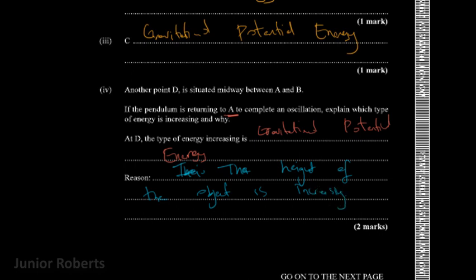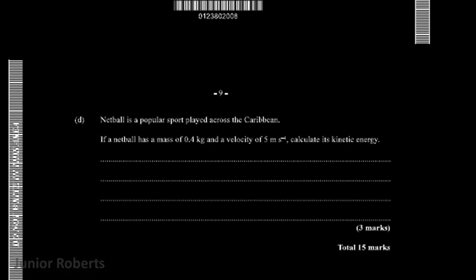The final question says that netball is a popular sport played across the Caribbean. If a netball has a mass of 0.4 kilogram and a velocity of five meters per second, calculate the kinetic energy. The formula for kinetic energy is equal to half m times v squared. So we can say that KE is equal to one half of the mass, which is 0.4 kilogram, multiplied by the velocity, which is five meters per second, and that will be squared.